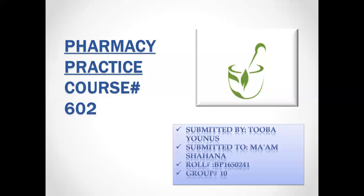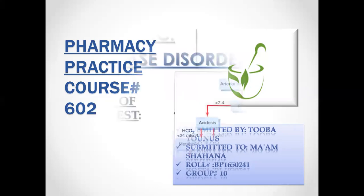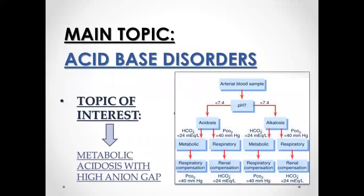Assalamu alaikum. My name is Tuba Yunus, my role number is BP1650241, and I'm from group N. The main topic is acid-base disorders, and the topic of interest is metabolic acidosis with high or elevated anion gap.